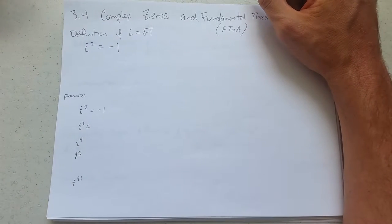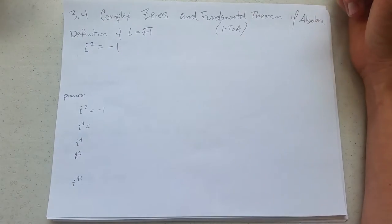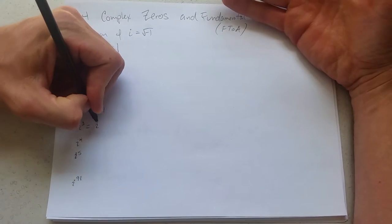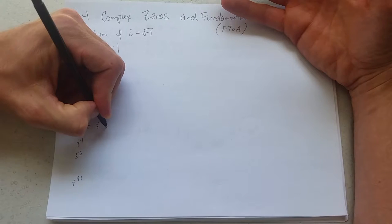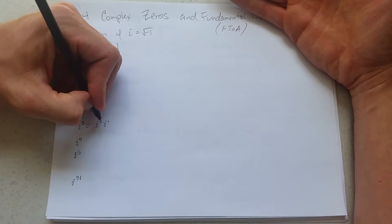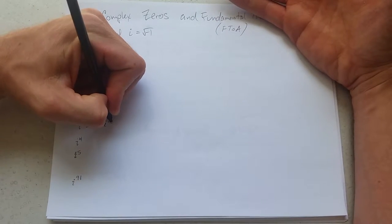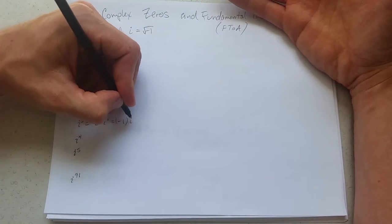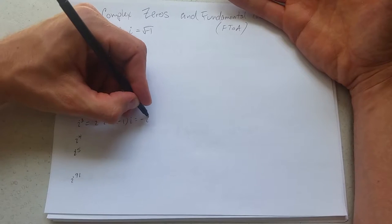What's i cubed? Now these numbers need to follow all of the regular algebraic patterns. So i cubed is i squared times i to the first power. You add the powers together, you get i cubed. And i squared is negative 1 times i. So i cubed is negative i.